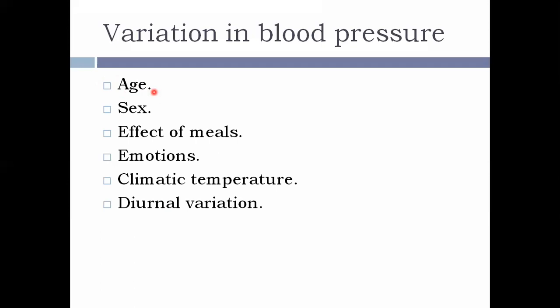After 40 years, blood pressure rises very slowly. Around 70 years of age, the average blood pressure will be around 170/90 mmHg. This is because of the decreased elasticity of the blood vessel wall.